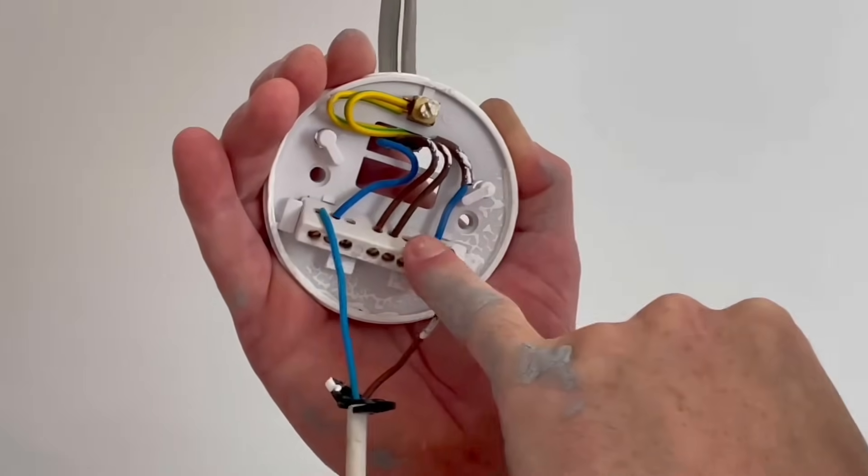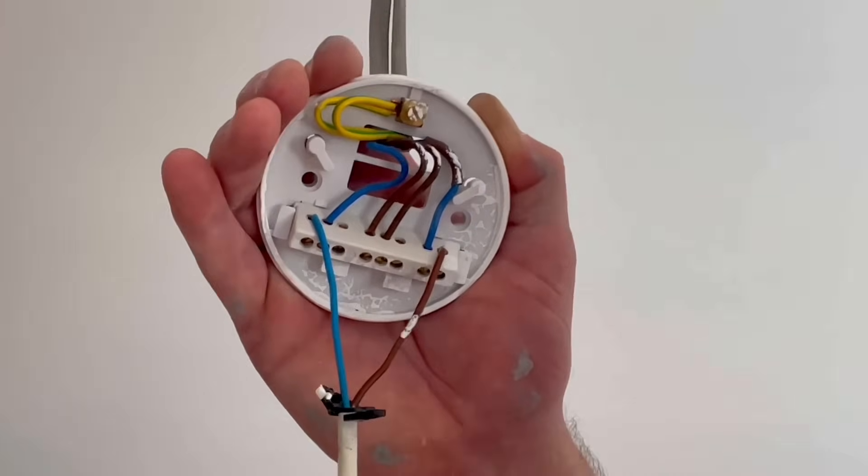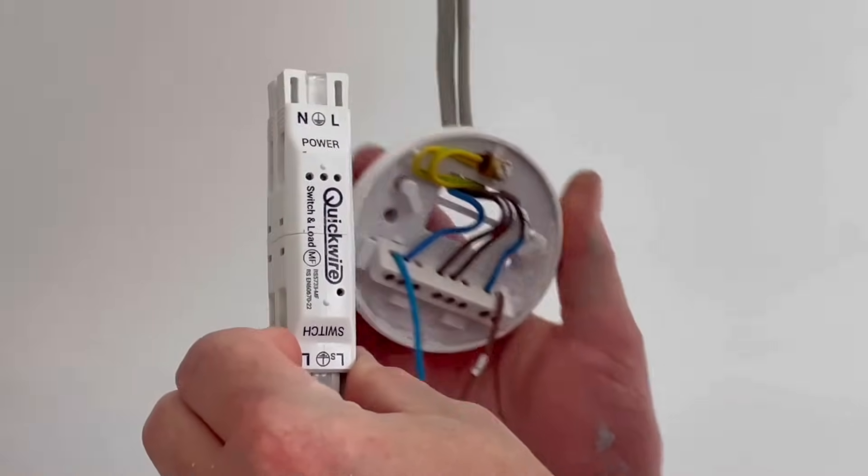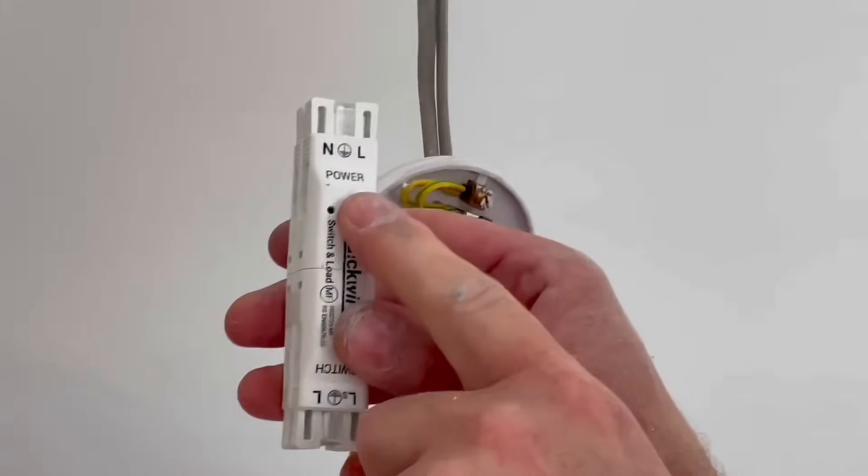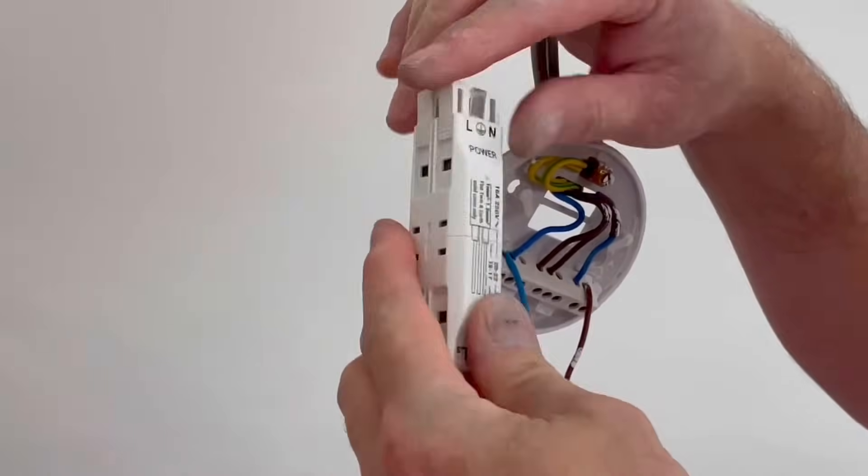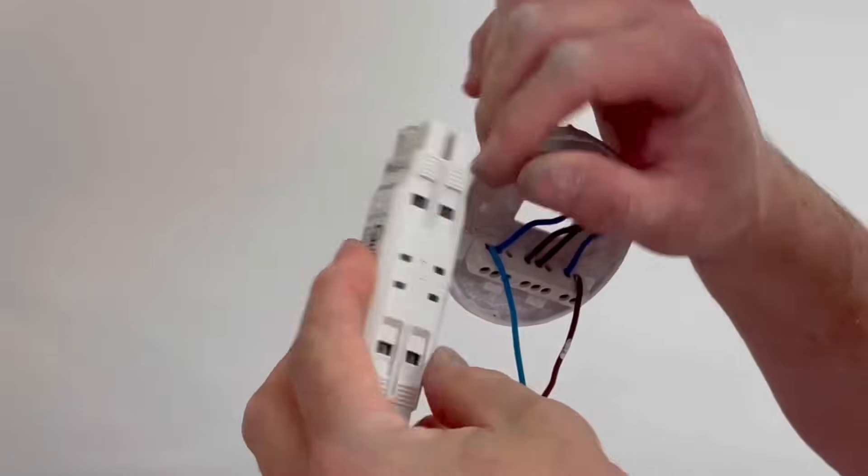So we're going to need to take these connections out and put them into our QuickWire connector. So here we've got our switch and load. Now you've got the power coming in which we've got coming into here but as it's the last point on circuit we won't need the connections on the other side which is the power out to the next room.